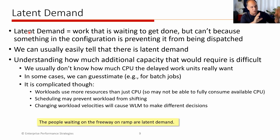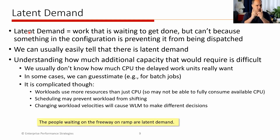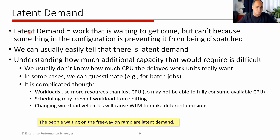Most environments have some moment in time where you have work backing up. It's a matter of what degree of latent demand you have. Do you have a little bit of latent demand where some work is always backing up? That's not necessarily a bad thing. Or are you one of these environments that just have hundreds of units of work waiting to use the CPU that are just not getting through? Understanding the amount of latent demand and how much more capacity is needed to actually address it is the more difficult issue.